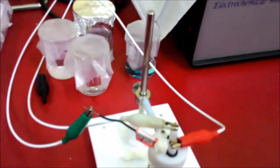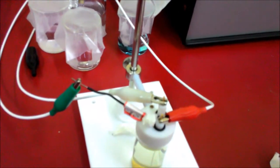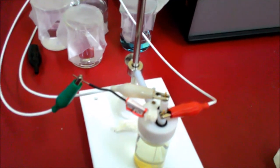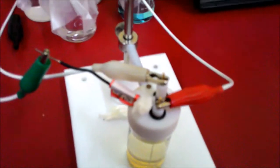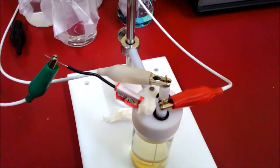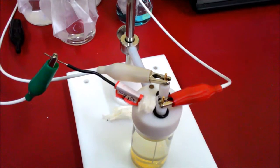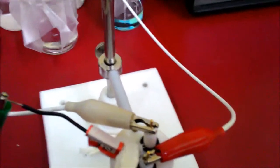This is our electrochemical cell. The green lead is connected to our working electrode. The red lead is connected to the counter electrode, which is a platinum wire, and the white one